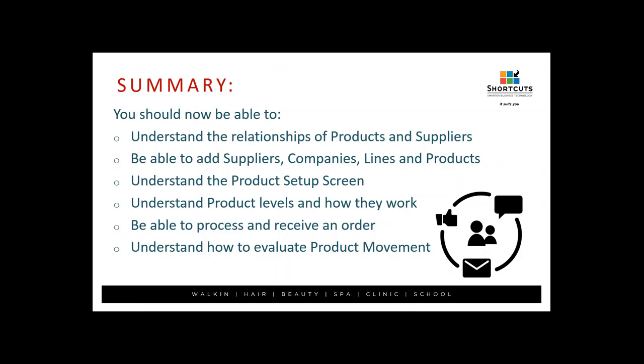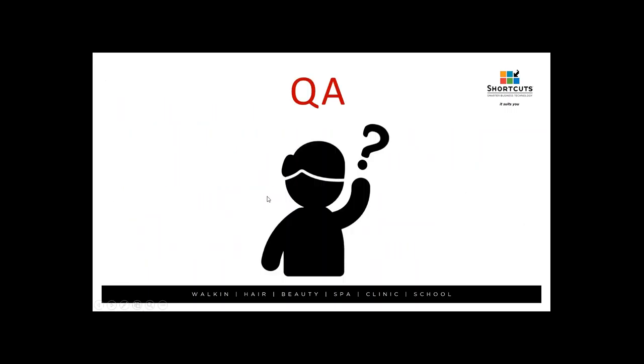That's walked you through stock management. You should now be able to understand the relationships of products and suppliers, add suppliers, companies, lines, and products, understand the product setup screen, understand product levels and how they work, process and receive an order, evaluate product movement, and understand stock reports and stock control. Now it's our questions and answers session.